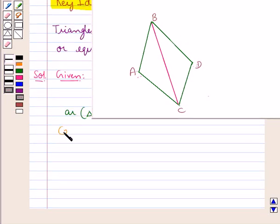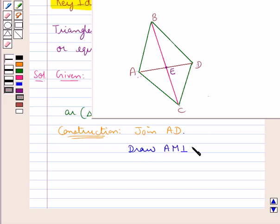First of all, we do some construction in which we join AD. So we have joined AD and let this point of intersection of AD and BC be point E. Then next, we draw AM perpendicular to BC and DN perpendicular to BC.